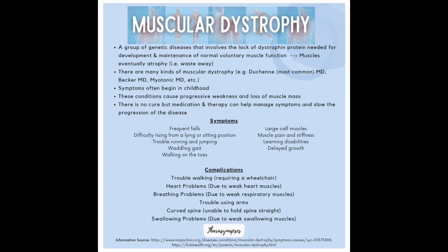It's important to keep in mind there are actually many kinds of muscular dystrophies. Duchenne muscular dystrophy is the most common; Becker's and myotonic muscular dystrophy are other types. As Brad explained, he has Becker's MD. Symptoms often begin in childhood, causing progressive weakness and loss of muscle mass. There is no cure, but medication and therapy are used to help manage symptoms and slow down disease progression. Patients often present with frequent falls, difficulty rising from a lying or sitting position, trouble running or jumping, a waddling gait, and walking on the toes.